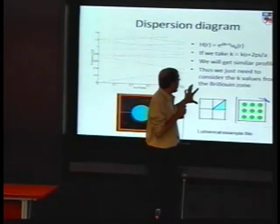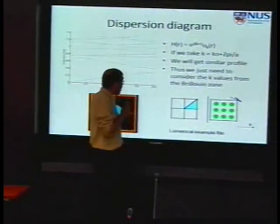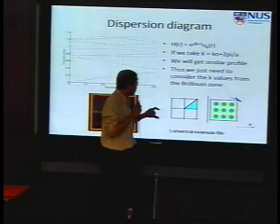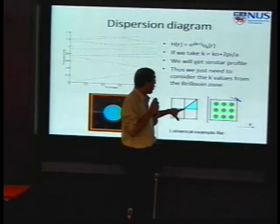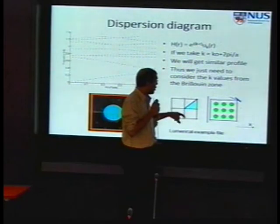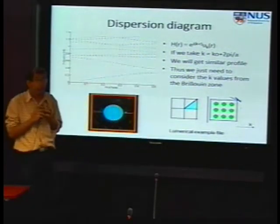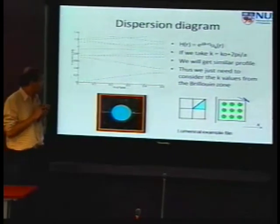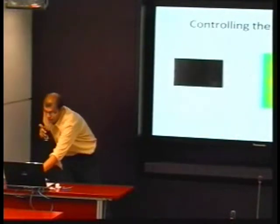Basically, we can reduce and limit our values of k. We can get this value of k from the Brillouin zone. For different types of crystals, we can have different Brillouin zones.